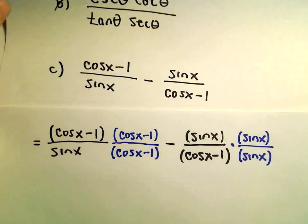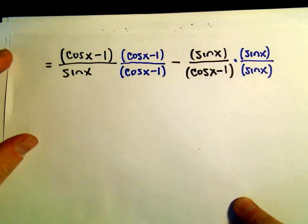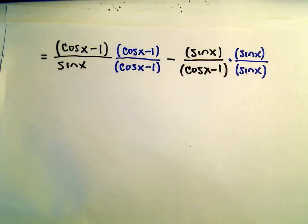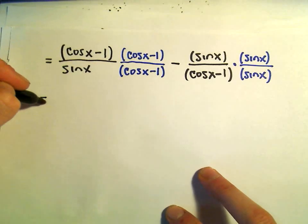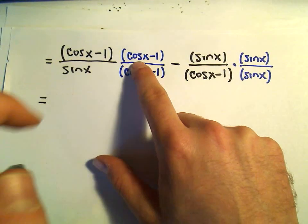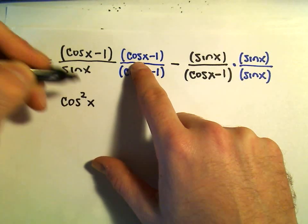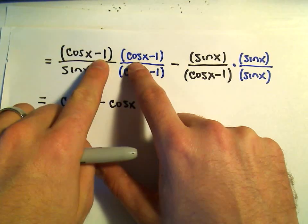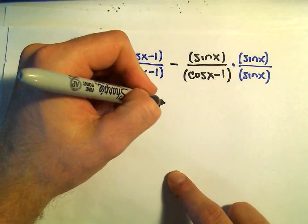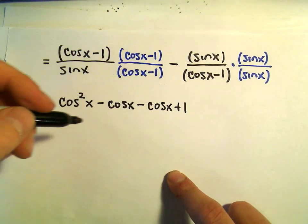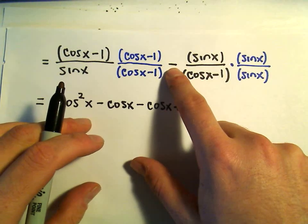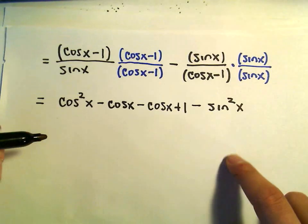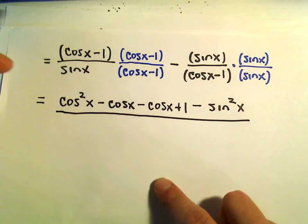When you simplify fractions, the simplification is going to happen in the numerator, so I'm not really going to do much to the denominator — I'm not going to distribute that sine x or anything. For things to simplify down, you want things to be factored so you can cancel. In the numerator we'll have cosine x times cosine x, giving us cosine squared x; cosine x times negative 1 gives negative cosine x; another negative 1 times cosine x gives another negative cosine x; and negative 1 times negative 1 gives positive 1. In the second fraction we have minus sine x times sine x, which is minus sine squared x.